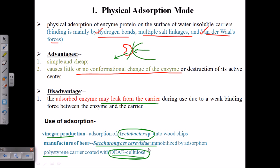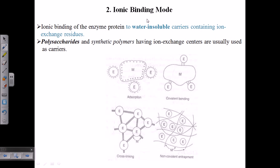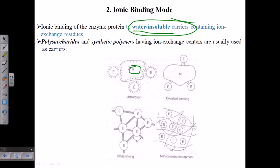The second type is the ionic binding mode. In ionic binding, the enzyme protein attaches to a water-insoluble carrier — water insolubility being an important property for carriers. The carrier has a particular charge; for example, if the matrix carries a positive charge, it will bind with negatively charged enzymes, since opposite charges attract. The enzyme attaches via ionic interaction.